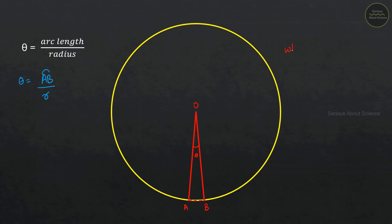When theta is small, the curved length AB can be assumed to be equal to the straight line AB.